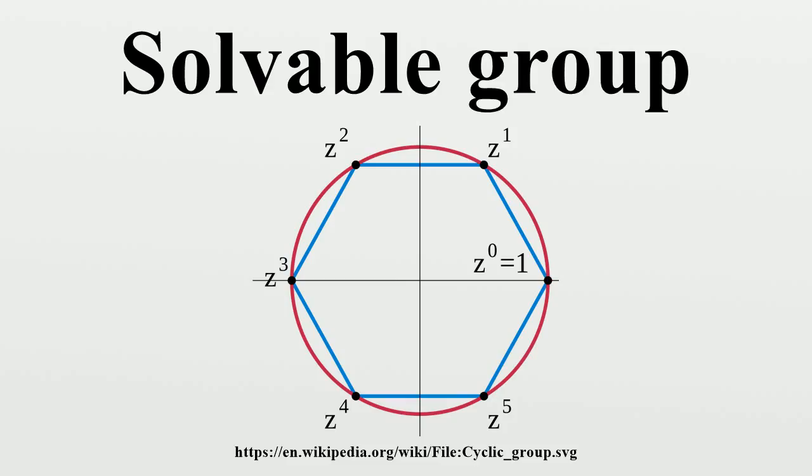Related concepts: Super-solvable groups is a strengthening of solvability. A group G is called super-solvable if it has an invariant normal series whose factors are all cyclic. Since a normal series has finite length by definition, uncountable groups are not super-solvable. In fact, all super-solvable groups are finitely generated, and an abelian group is super-solvable if and only if it is finitely generated.